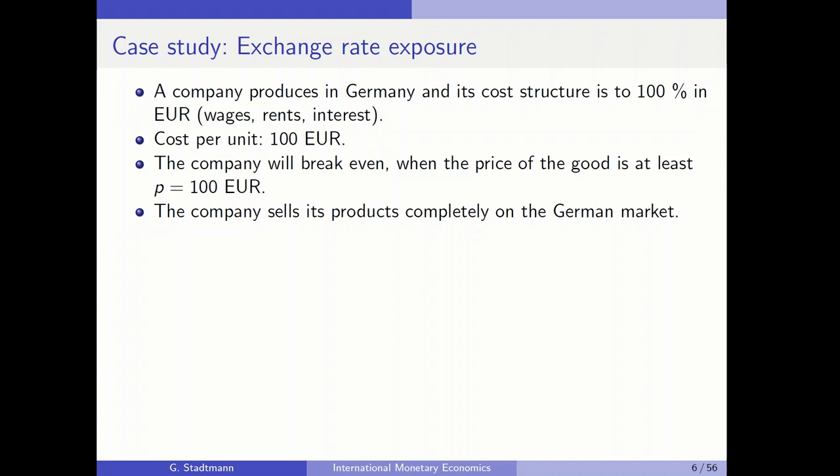Let's look at this case study, which deals with the exchange rate exposure of one German company. The company produces in Germany and its cost structure is 100% in euros — wages, rents, and interest rate payments are all made in euros. The cost to produce one product is equal to 100 euros, so the company needs a price of at least 100 euros to break even. The company sells its products completely on the German market, so both costs and revenues are entirely in euros.